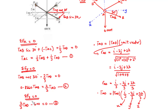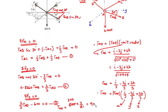From Equation 3, we transpose 600 to the right-hand side to find TAD. TAD = 600 ÷ (2/3) = 600 × (3/2). Simplifying: 300 × 3 = 900. Therefore, TAD = 900 N.